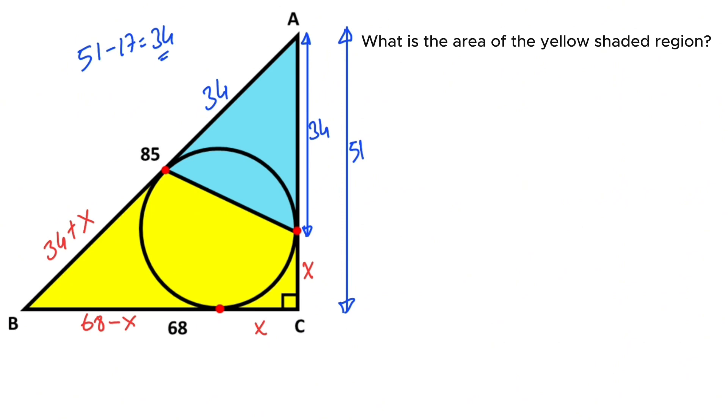And the length of AC we have calculated as 51. Okay, let's clear here. We can calculate the value of the yellow shaded region area. The yellow shaded region area equals right triangle area minus blue shaded triangle area.